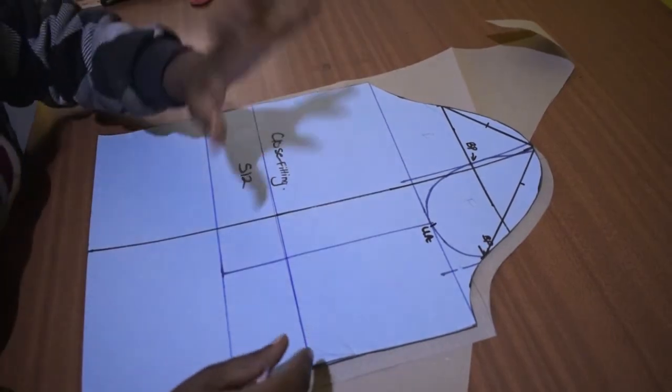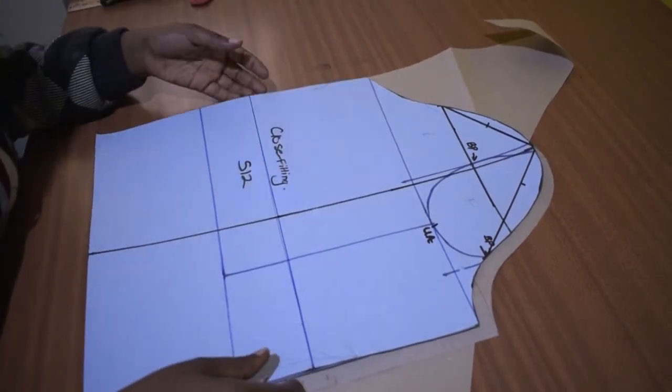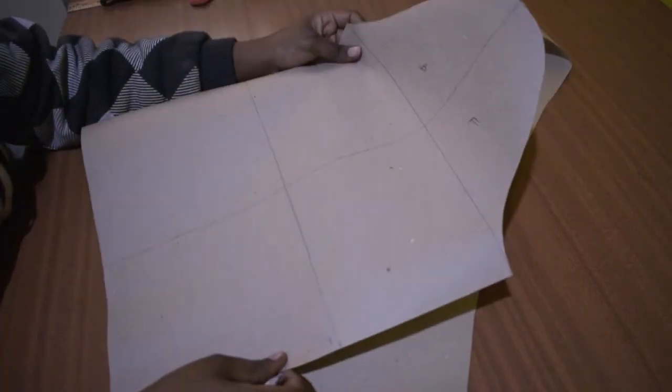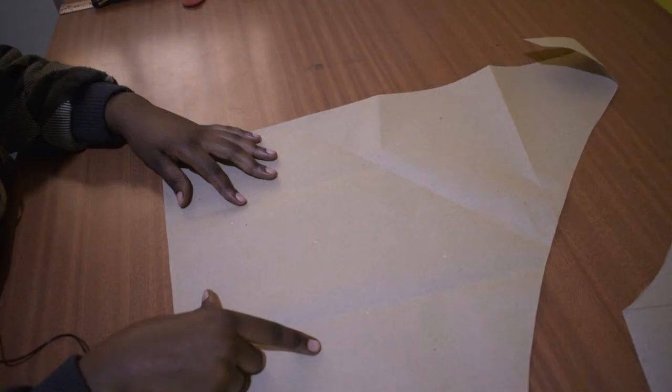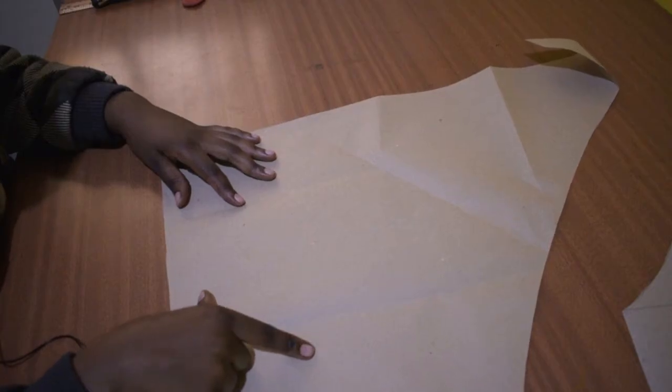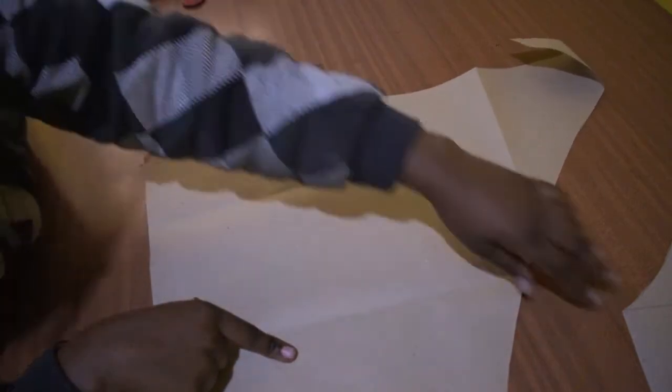So I have my block here. You need to trace that out. You would follow the same procedure as you would when making a circle skirt, only that the measurements would be these ones instead of the waist circumference.